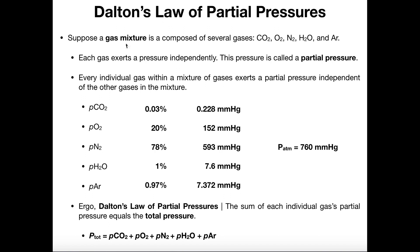Suppose we have a gas mixture — a mixture of different gases composed of several different gases: carbon dioxide, oxygen, nitrogen, water, and argon, which you may not have seen before. These are individual gas molecules within the gas mixture, and the reason it's a mixture is because it's a combination of all five of these things. It's not an equal amount of each; if they were equal, they'd each be 20% of the entire gas mixture, but they all have a different relative amount.